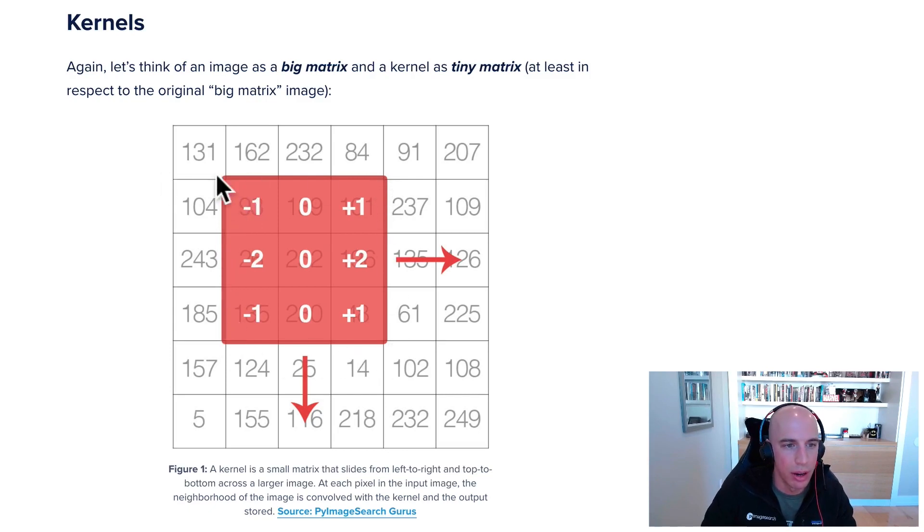This red area here is your tiny matrix—this is your kernel. What you're going to do is position the center of this kernel on top of a pixel and slide left to right, then top to bottom, one pixel at a time. At every stop of this sliding window, you're going to perform an operation.